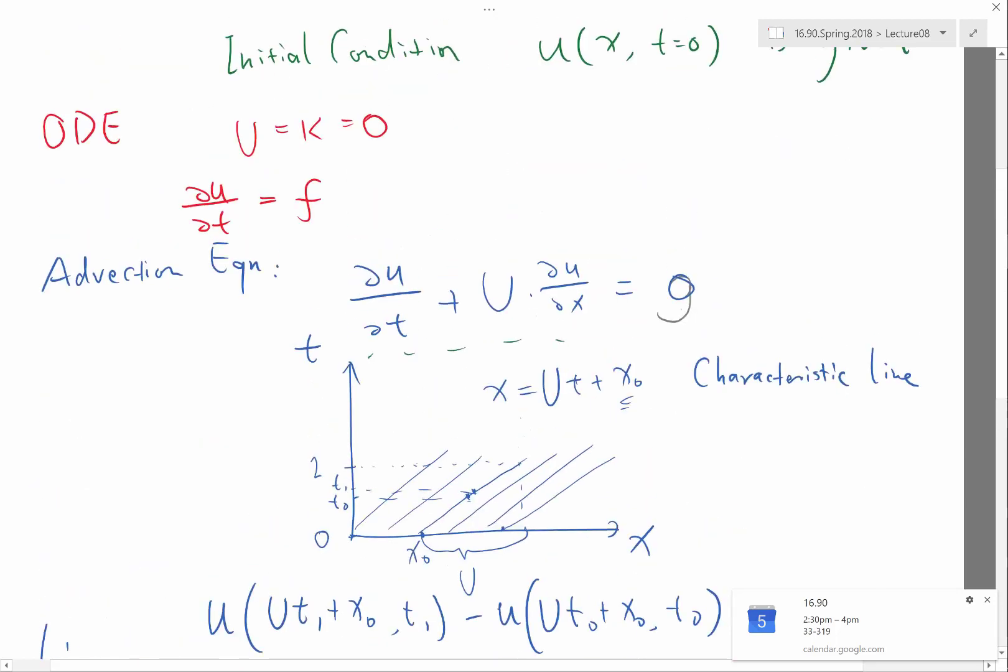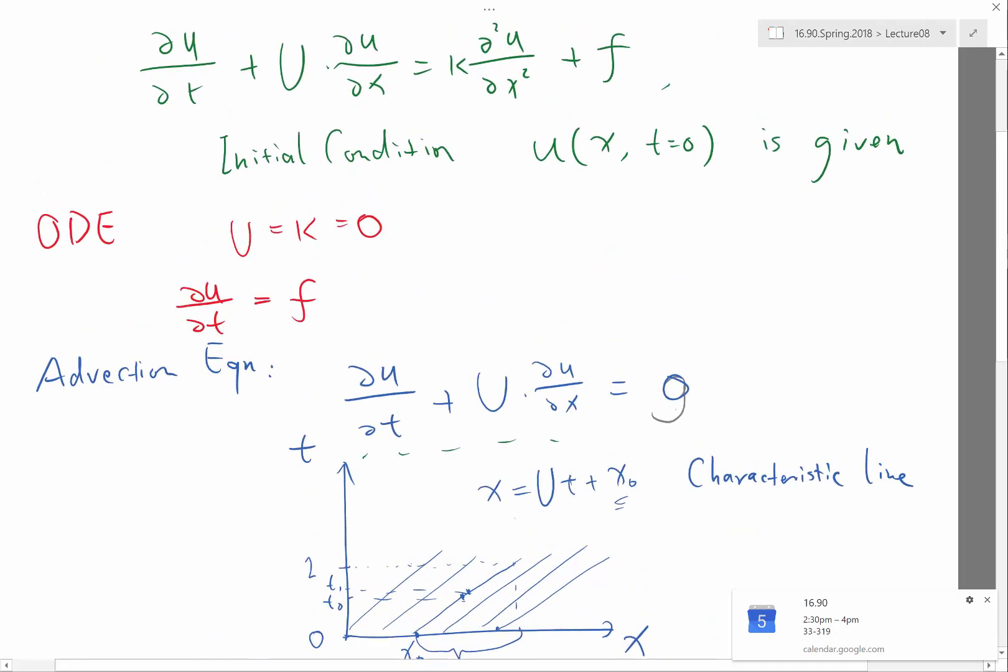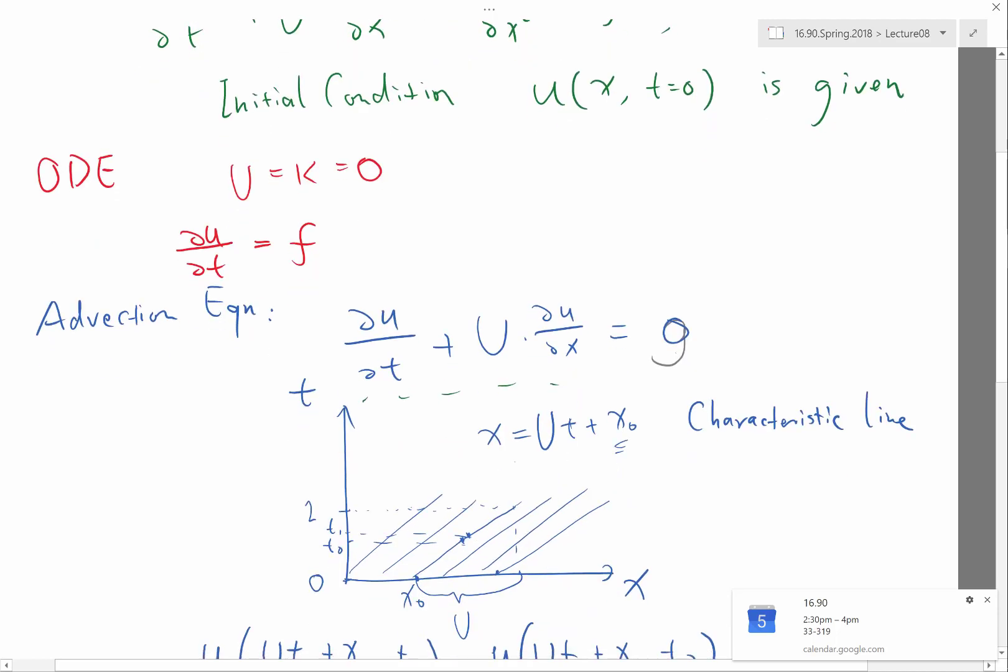So in some sense, the ODE case, this particular case is a special case of this case with u equal to zero. So if u equal to zero, what are the characteristic lines? They are just x equal to zero times t plus x zero. They are just going straight up, right? Okay.